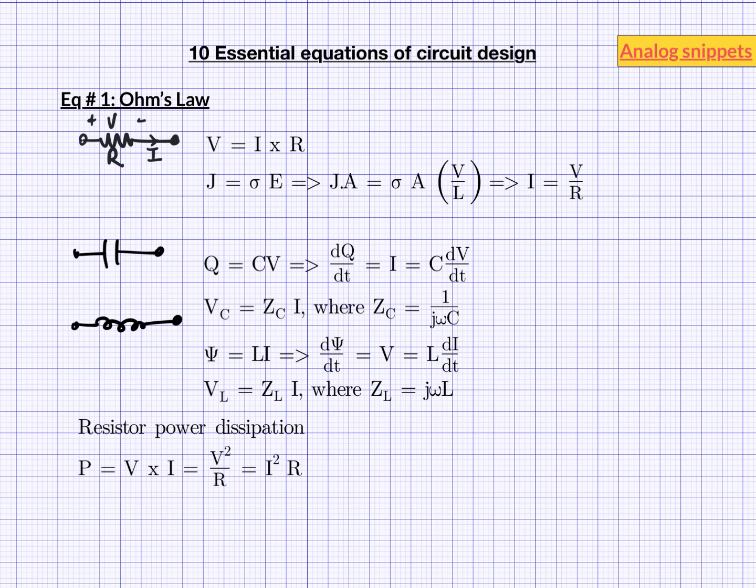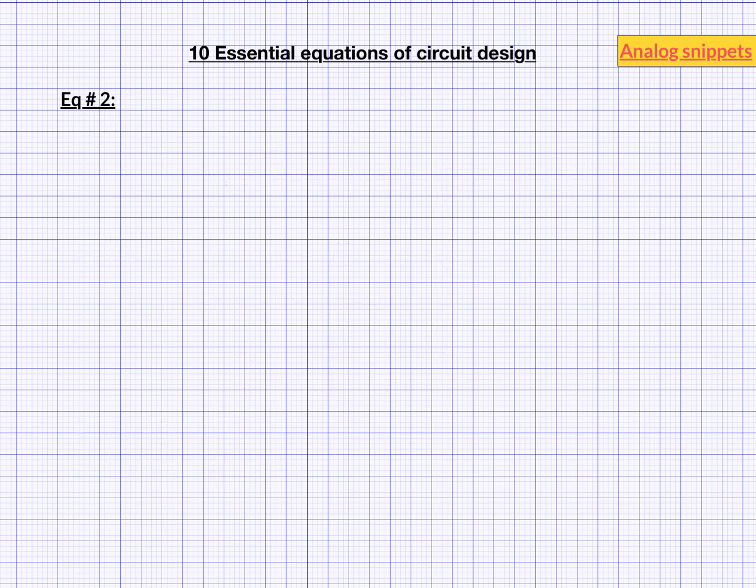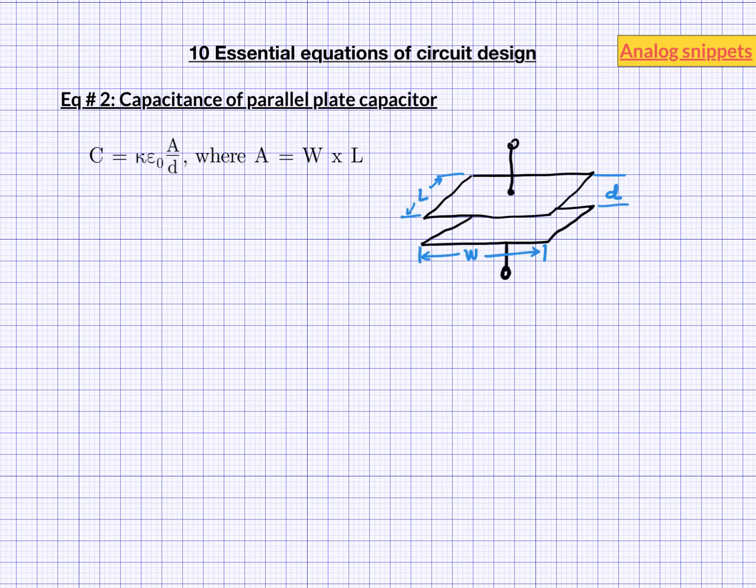Let's now move to our second equation. Second equation in my list is capacitance of a parallel plate capacitor. Ignoring fringe effect, the capacitance between two parallel plates is given by kappa epsilon 0 A over D. Where kappa is dielectric constant of the material between two plates, epsilon 0 is permittivity of the free space, A is the area of the plate and D is the distance between two plates.